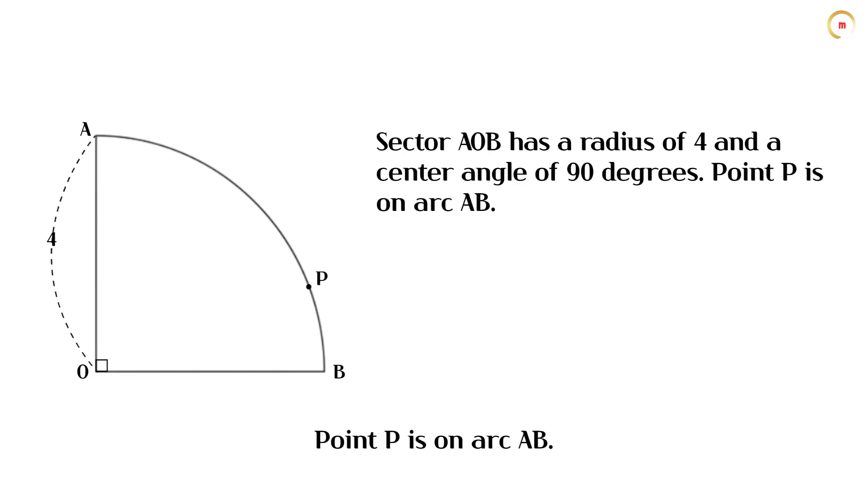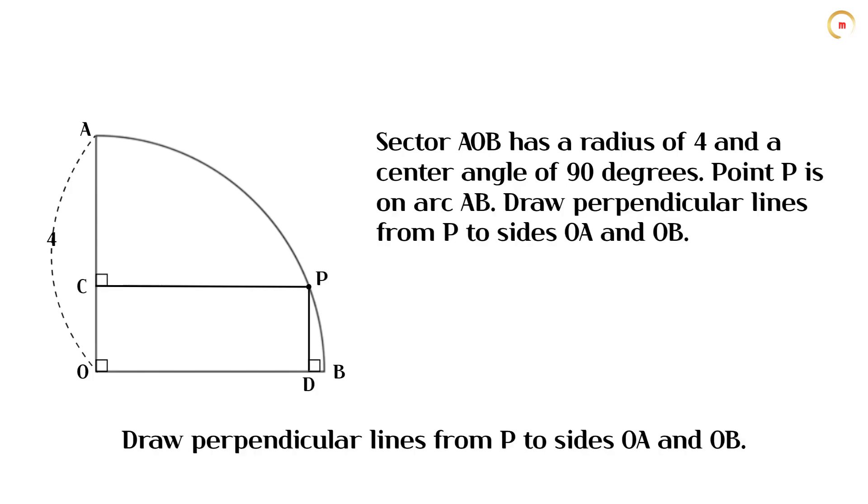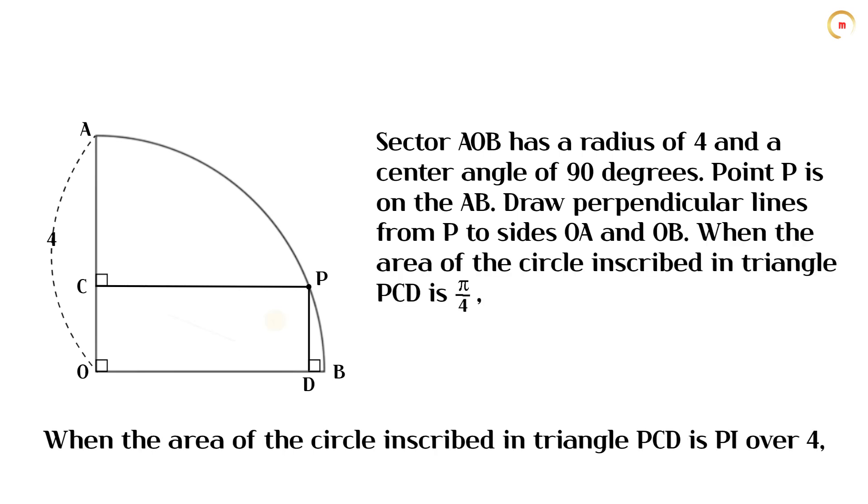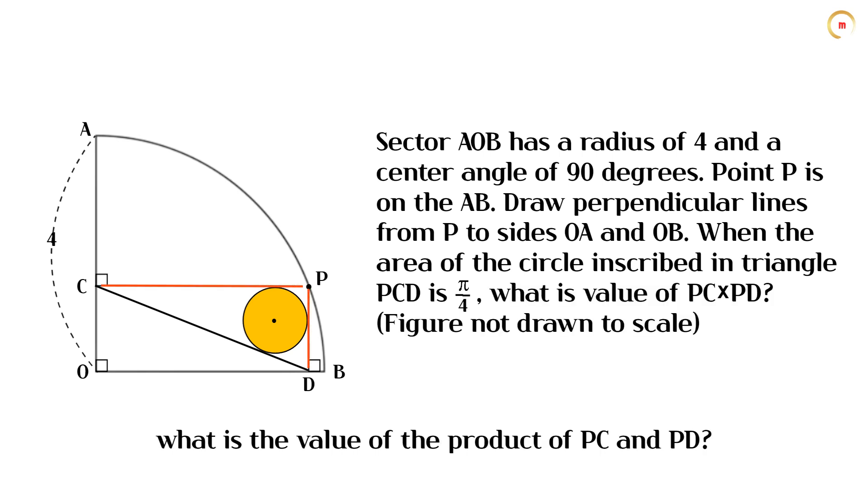Point P is on arc AB. Draw perpendicular lines from P to sides OA and OB. When the area of the circle inscribed in triangle PCD is pi over 4, what is the value of the product of PC and PD?